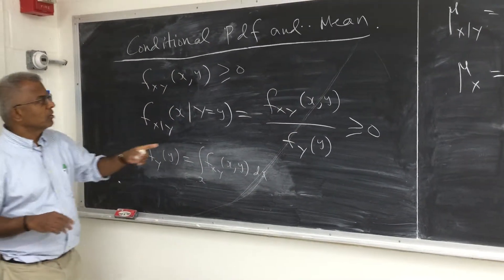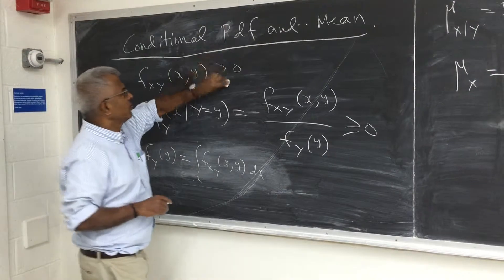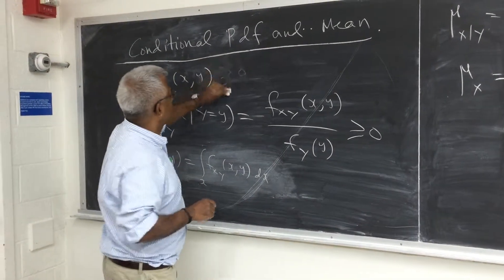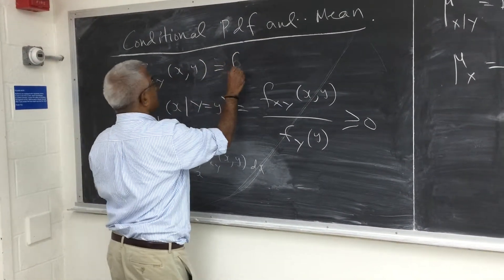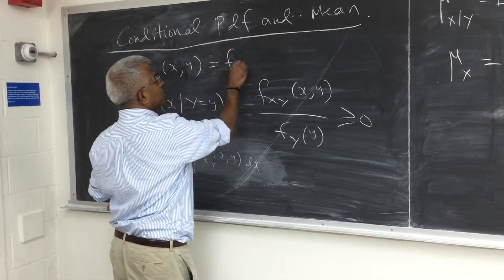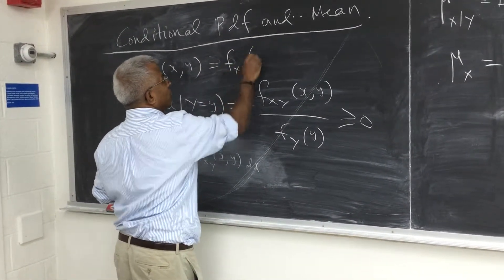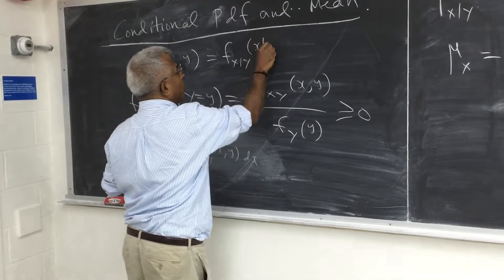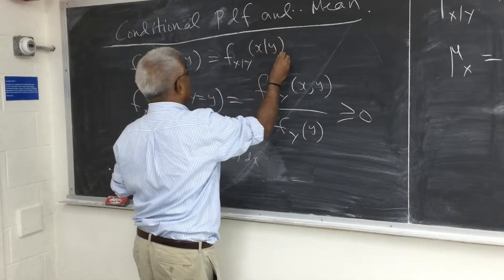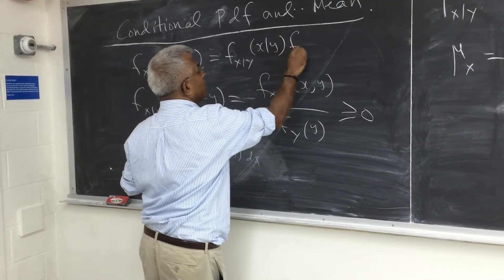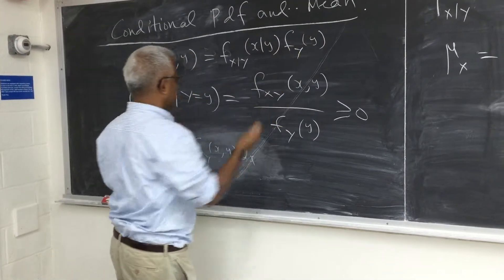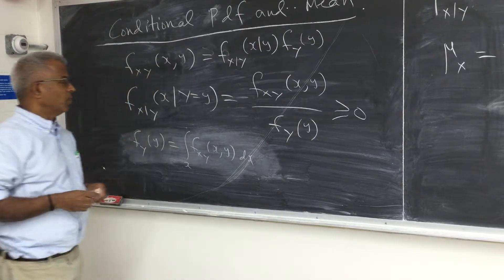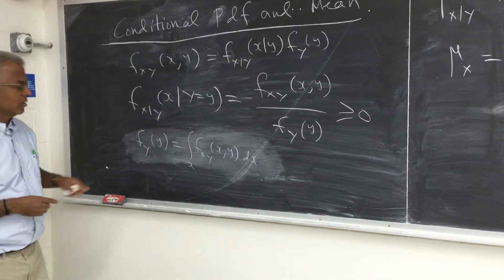Moreover, the joint density function can also be written as the conditional density function of X given Y, multiplied by F(Y,Y). So that's another way to look at it.